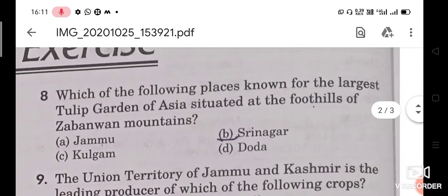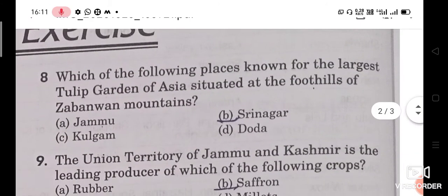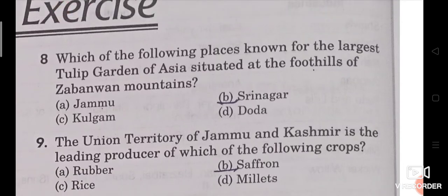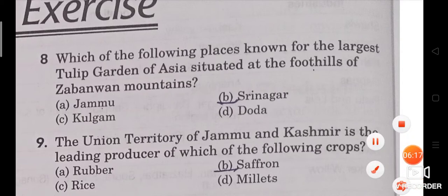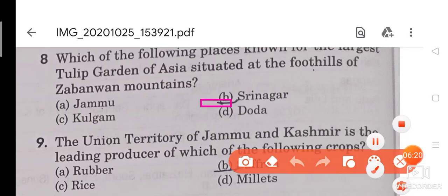Question 8: Which of the following places is known for the largest tulip garden of Asia, situated at the foothills of Zabarwan mountains? The right answer is Option B, that is Srinagar. Srinagar is the right answer.